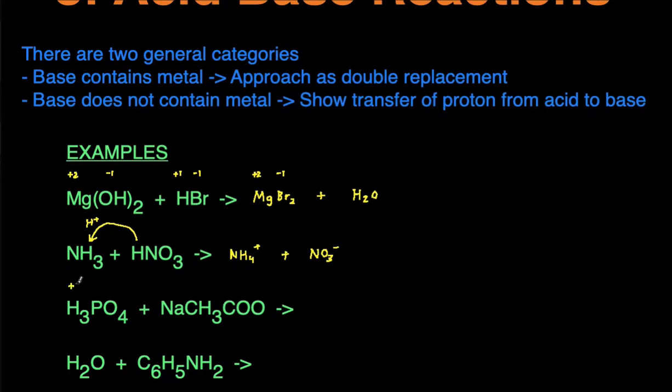First label the charges. H is positive 1. Phosphate is a polyatomic ion with a charge of negative 3. Sodium has a positive 1 charge and then acetate is a polyatomic ion with a charge of negative 1. Take my two positive charges and switch places, so I get HCH3COO.